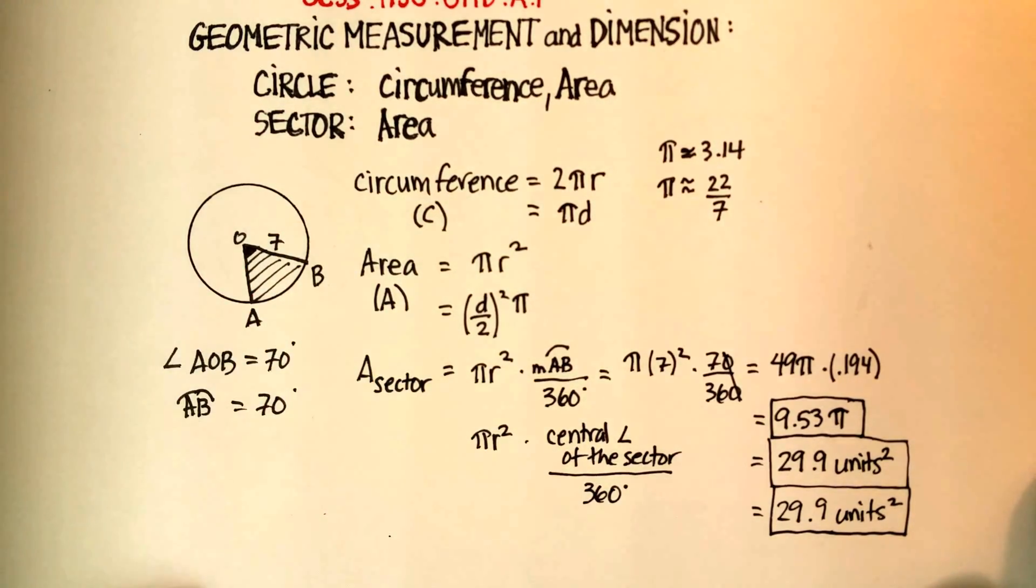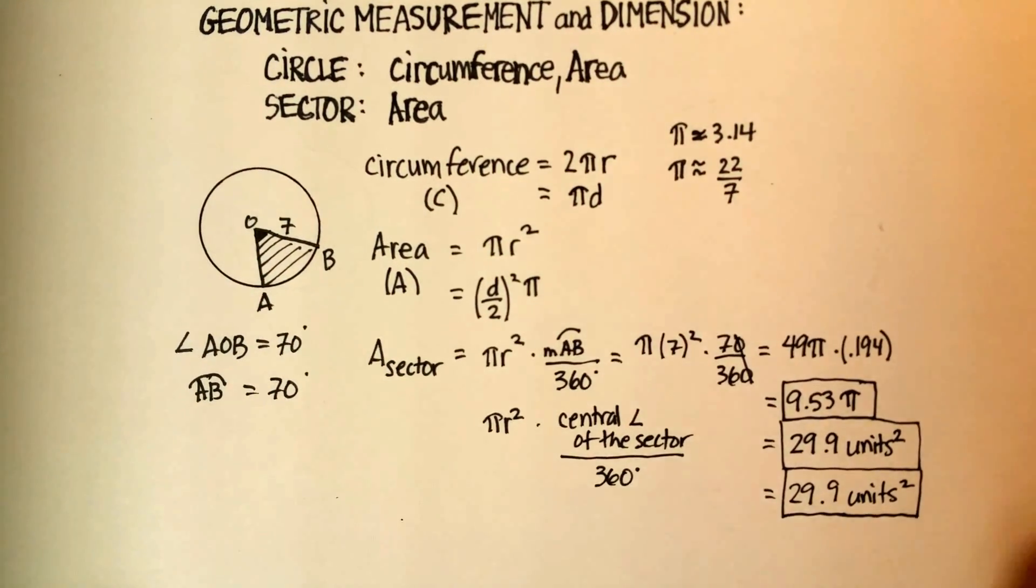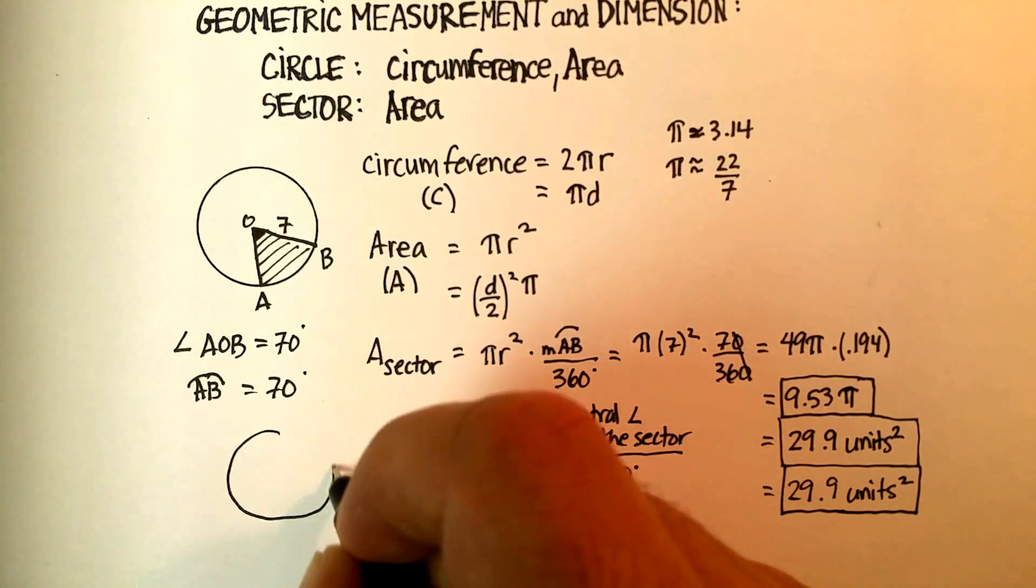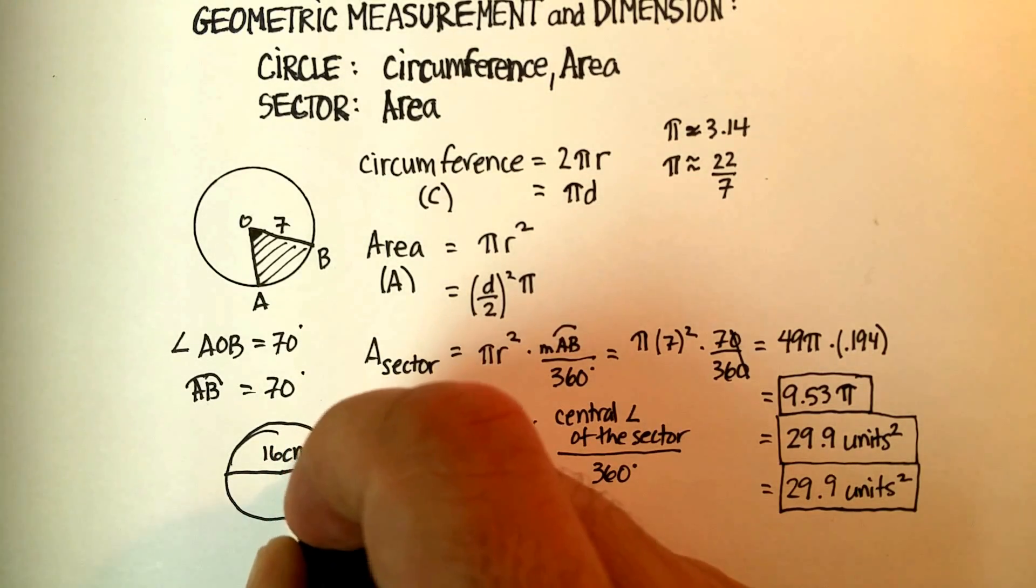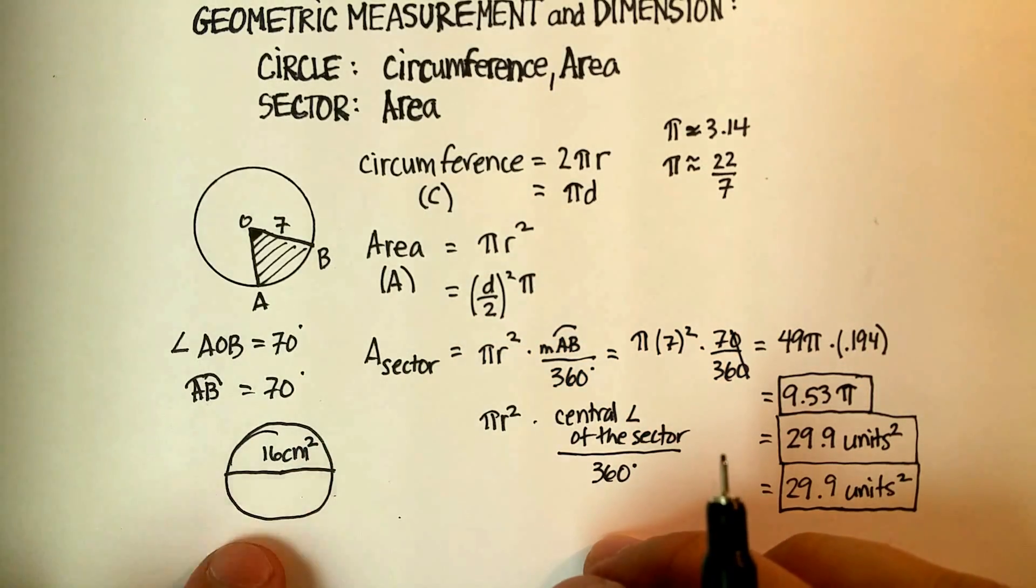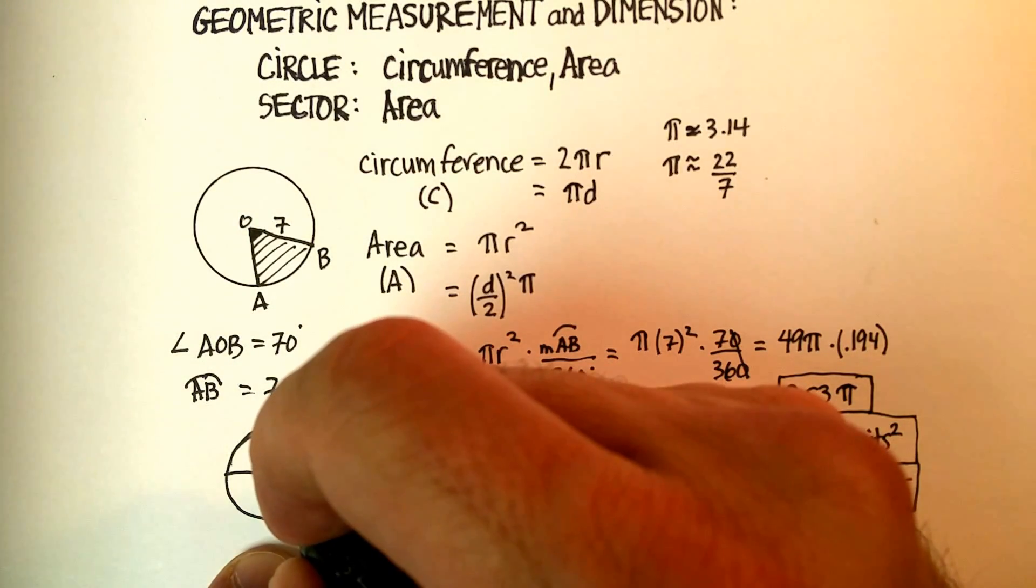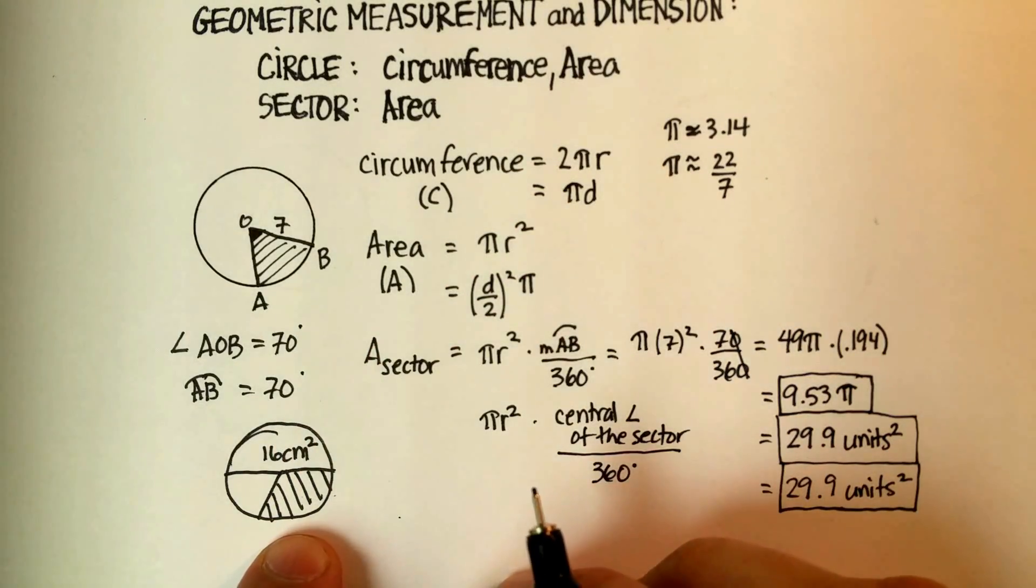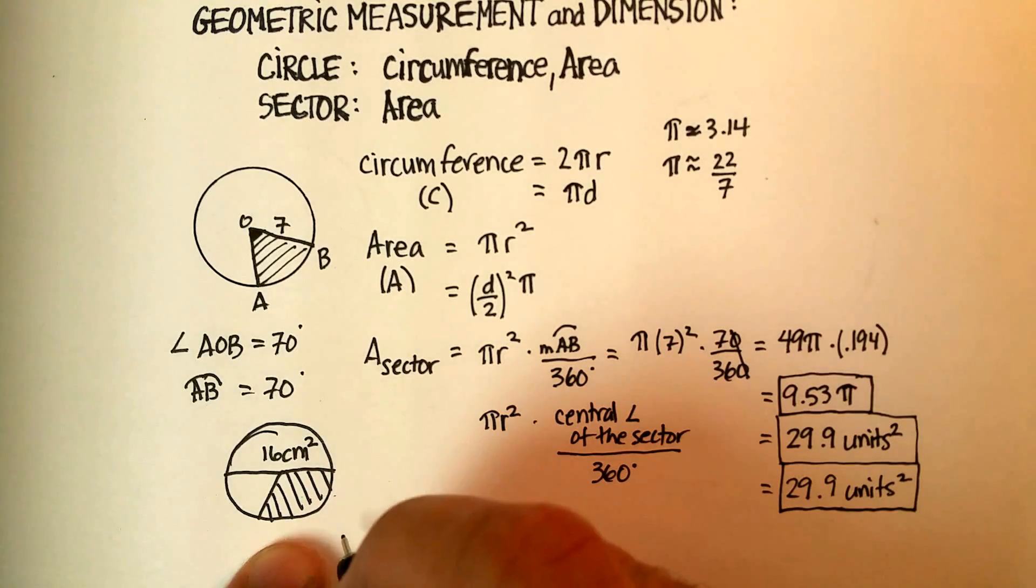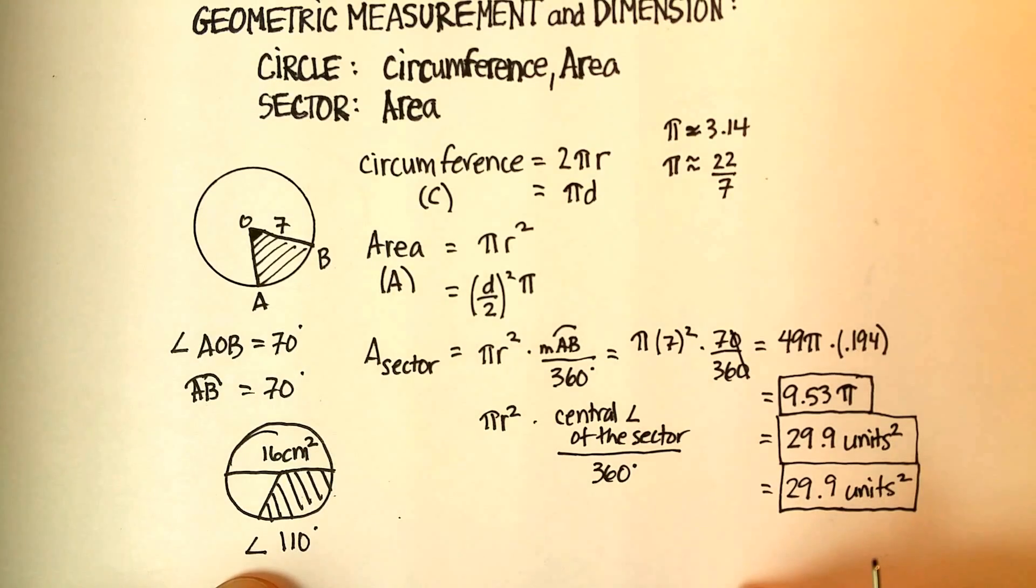So I hope that was helpful. Now let's go ahead and try a problem for you. Let's say I have a circle, I'm going to freehand that one, and let's say I know that the diameter is 16 centimeters squared. So let's actually use some units. I want you to find the area of the sector with a central angle of 110 degrees. And I'll have the answer in a different video. Thanks.